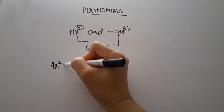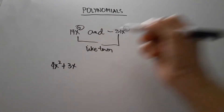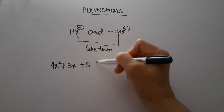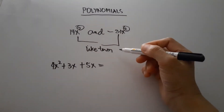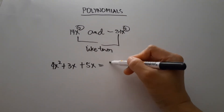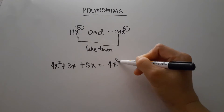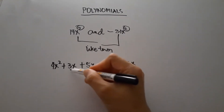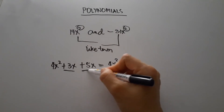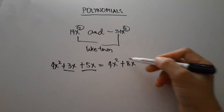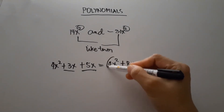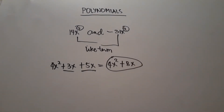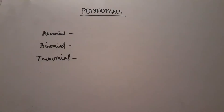For example, 4x squared plus 3x plus 5x simplifies to 4x squared plus 8x, since 3x and 5x are like terms so we can add them, and this is the result.